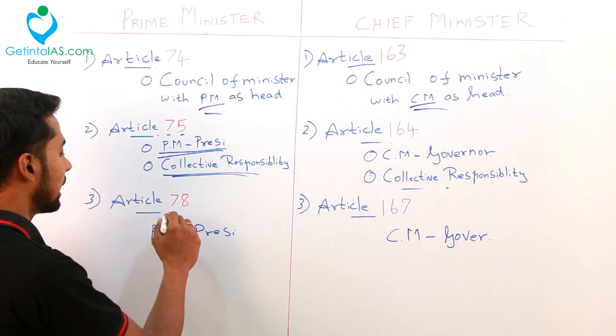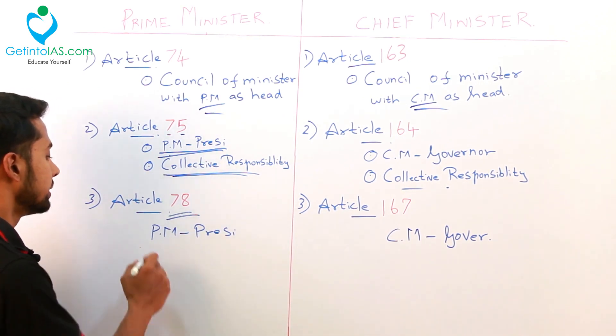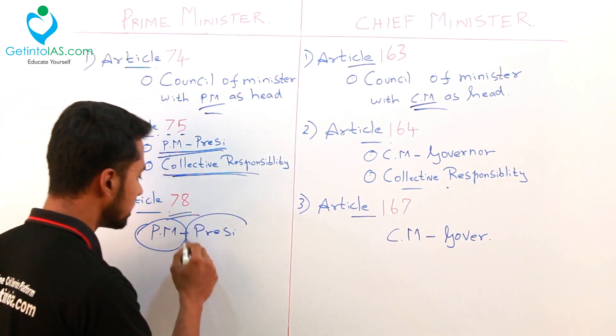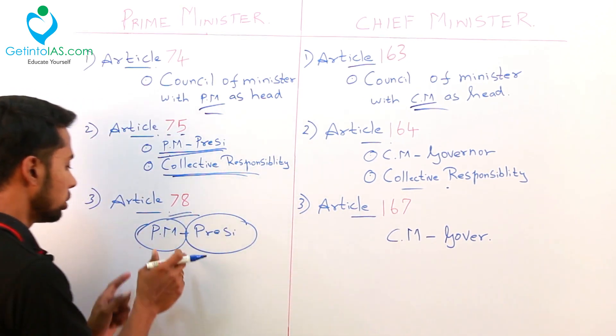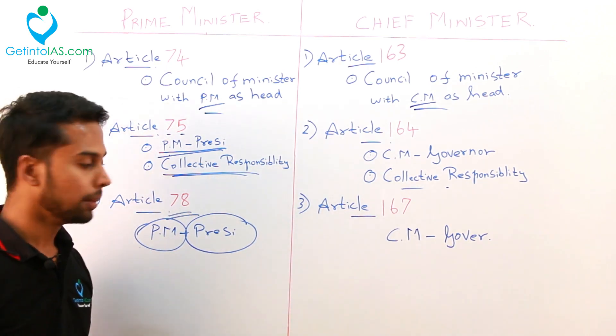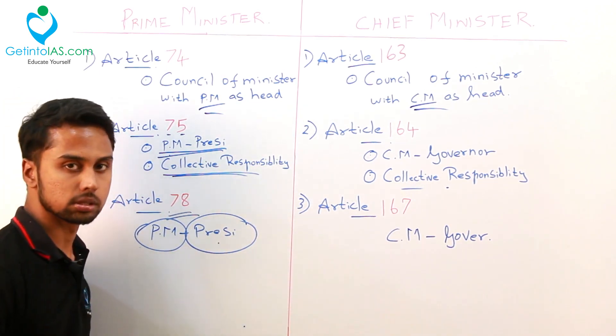Article 78 deals with the relation of the prime minister with the president. Your prime minister will act as a bridge between the president and the council of ministers.